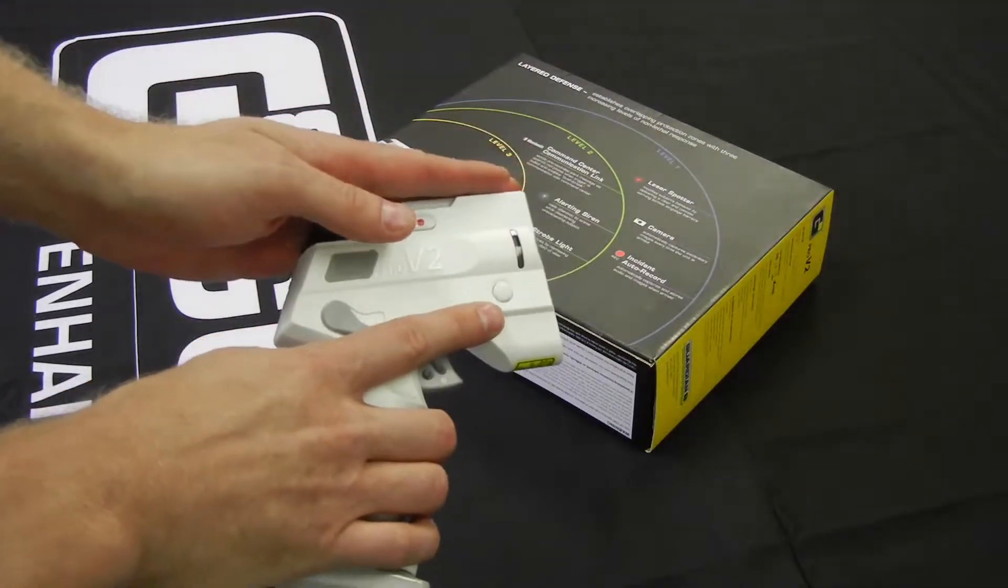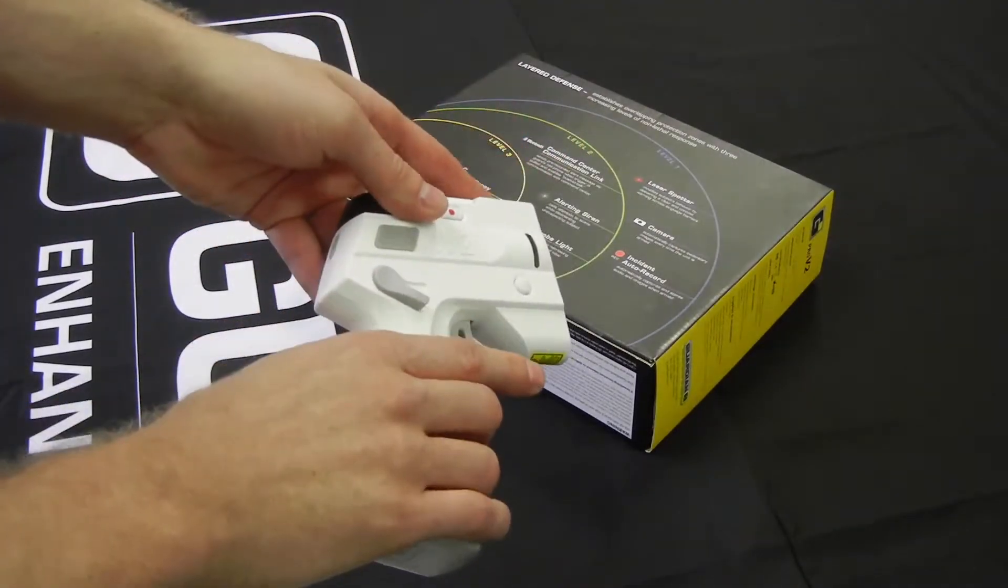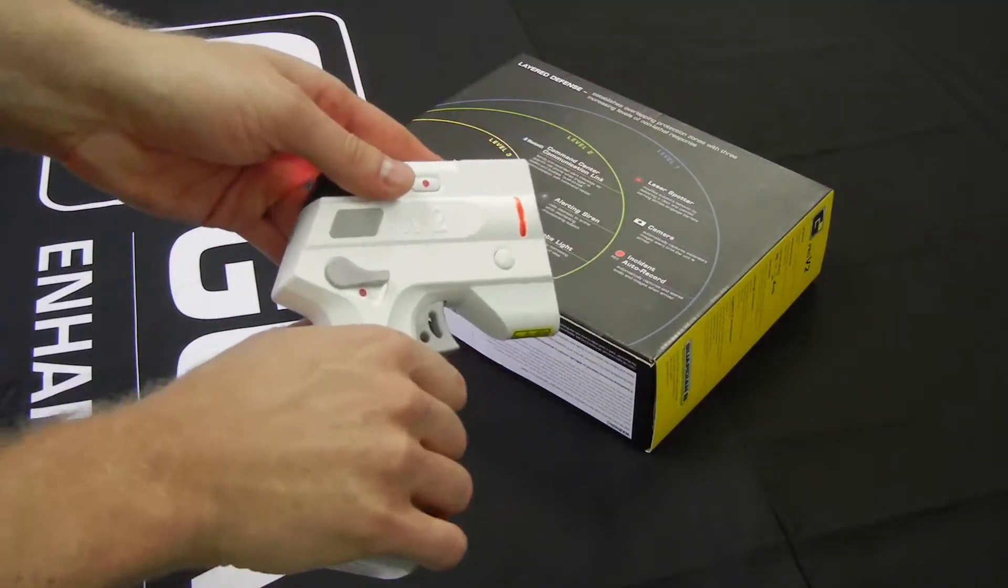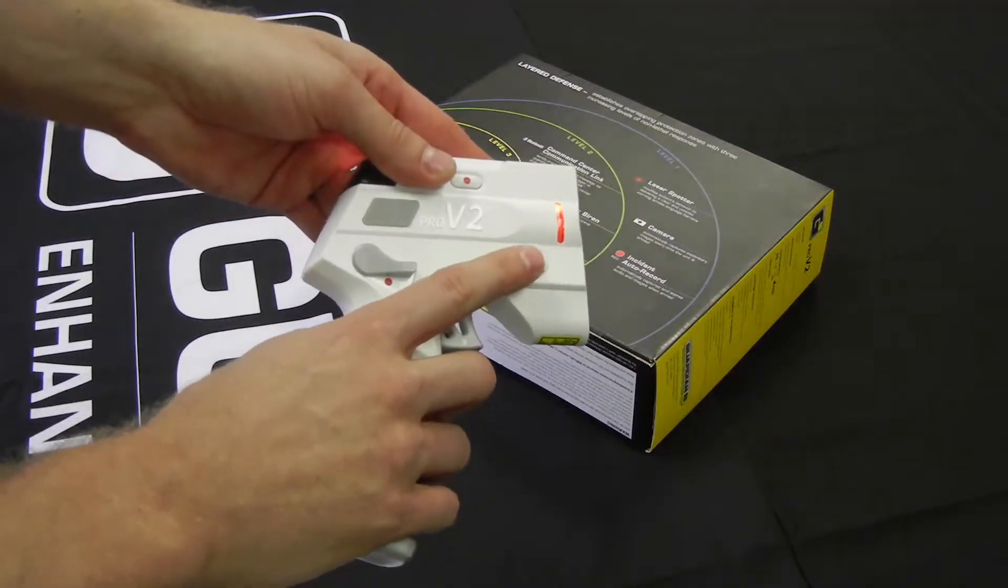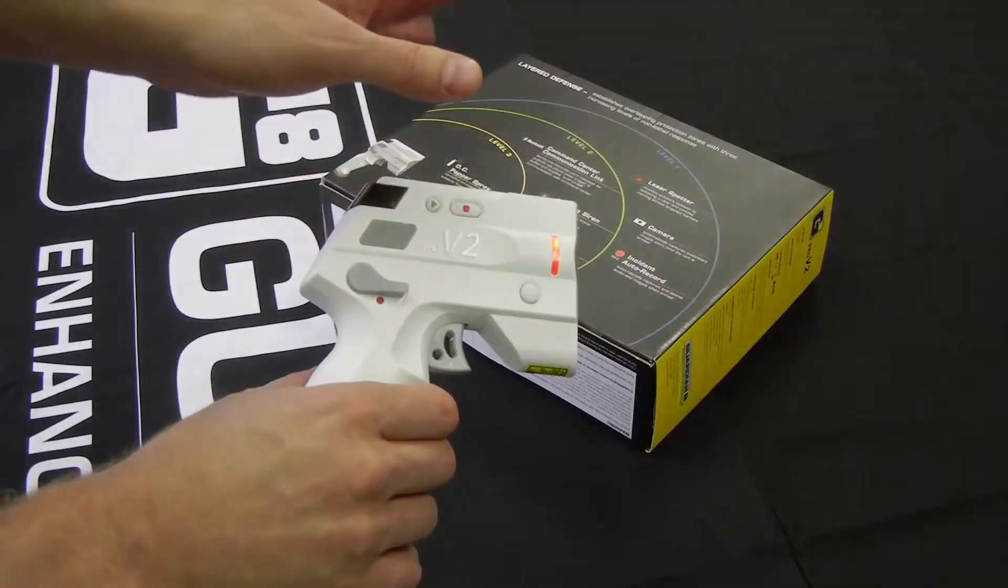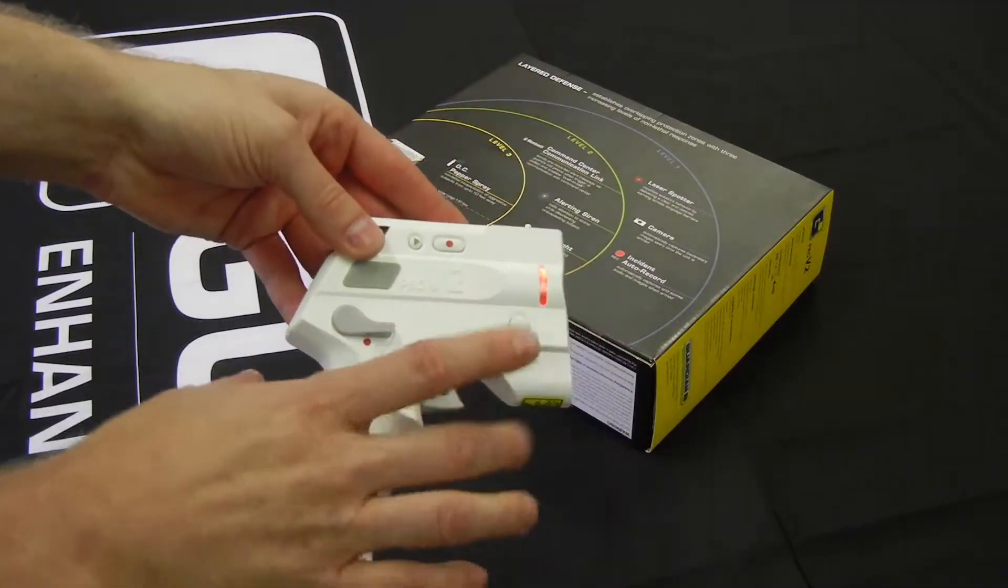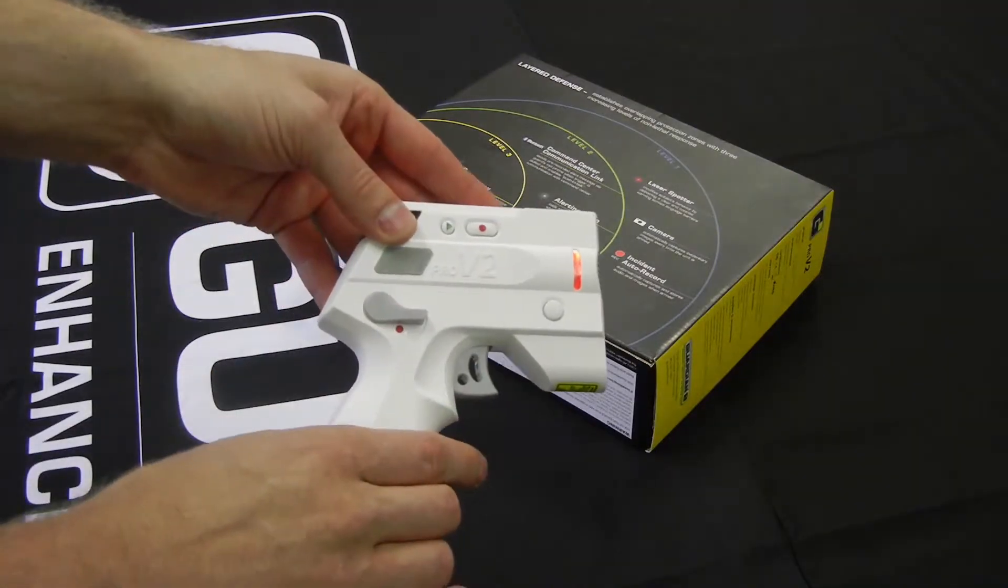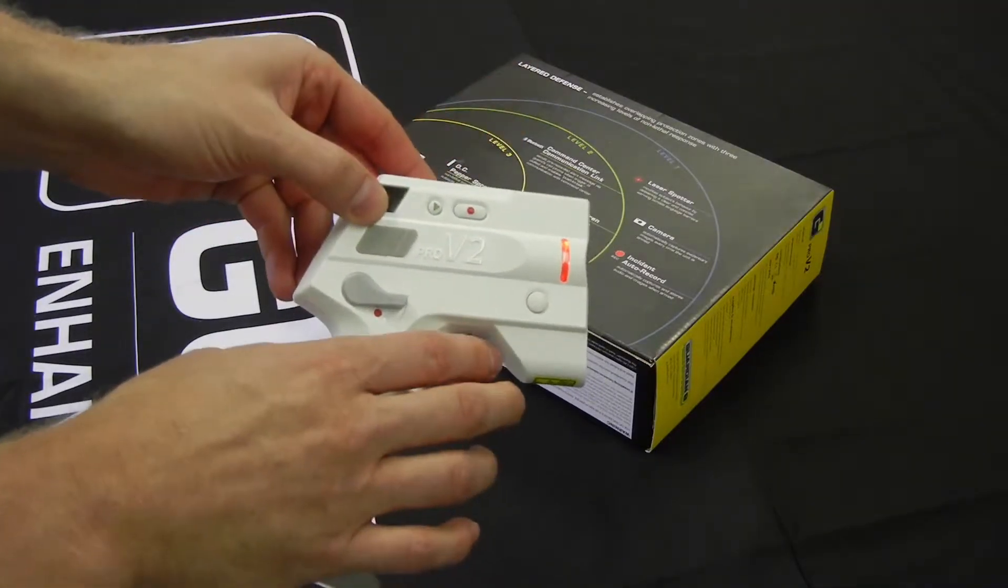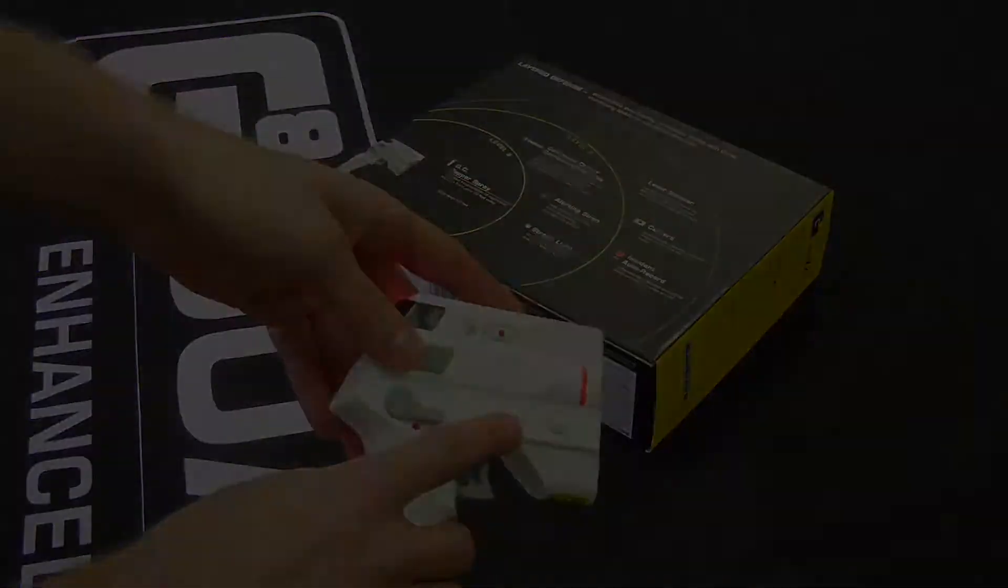Now caveat to that is that that automatically happens at level two, but I do have the ability at a level one activation to manually make that call by pushing this call button. The difference is the 15 second prerecorded message will not play if I manually activate the call. It will play if I go to a level two response and it automatically makes the call out. So that's a good thing to know.